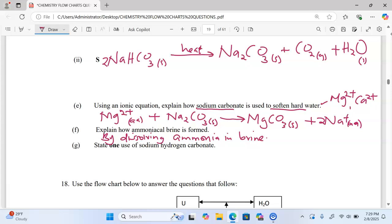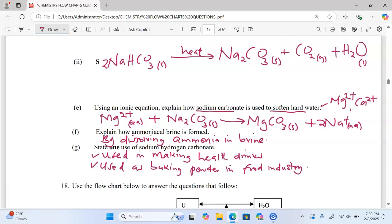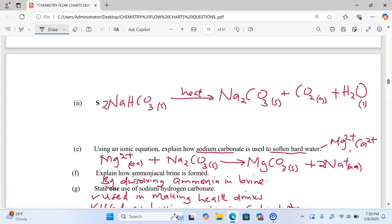State one use of sodium hydrogen carbonate. Sodium hydrogen carbonate has several uses, one being that of making healthy drinks, and it's used as baking powder in the food industry. There are many other uses of sodium carbonate, sodium silicate, and so forth.